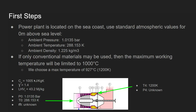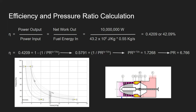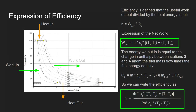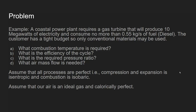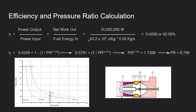At the combustor outlet the maximum temperature is 1200 K, but pressure and mass flow are unknown. For efficiency: η = Ẇ_net / Q̇_in = Ẇ_net / (ṁ_fuel · LHV) = 10×10⁶ W / (0.55 kg/s × 43.2×10⁶ J/kg) = 42.09%. This is a fairly high efficiency for a gas turbine.